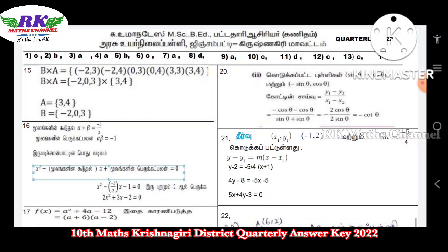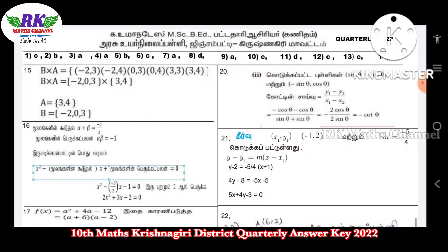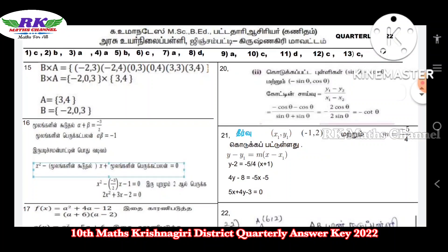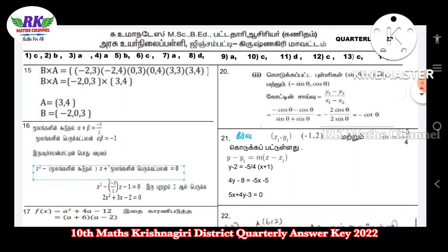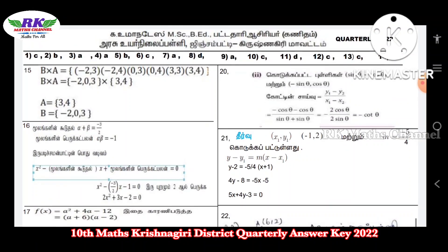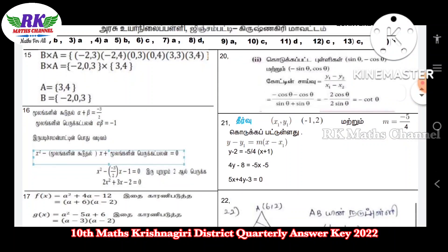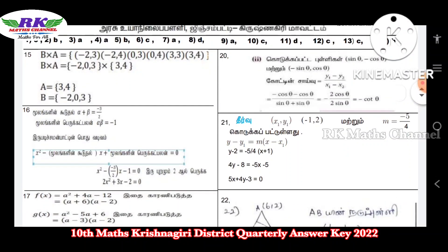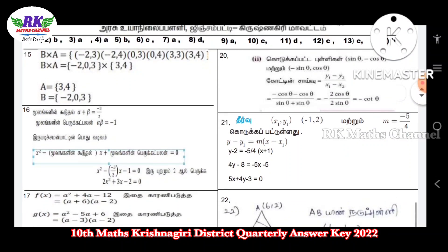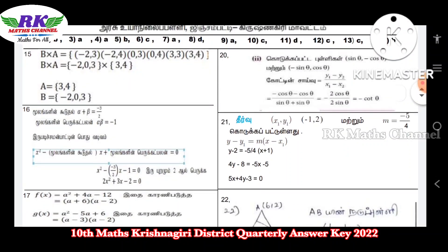First, for the 14 bits, the answers are written there. For question number 15, do A cross B and write it down. Other than the A set and B set, find what's in between — let's go through that.